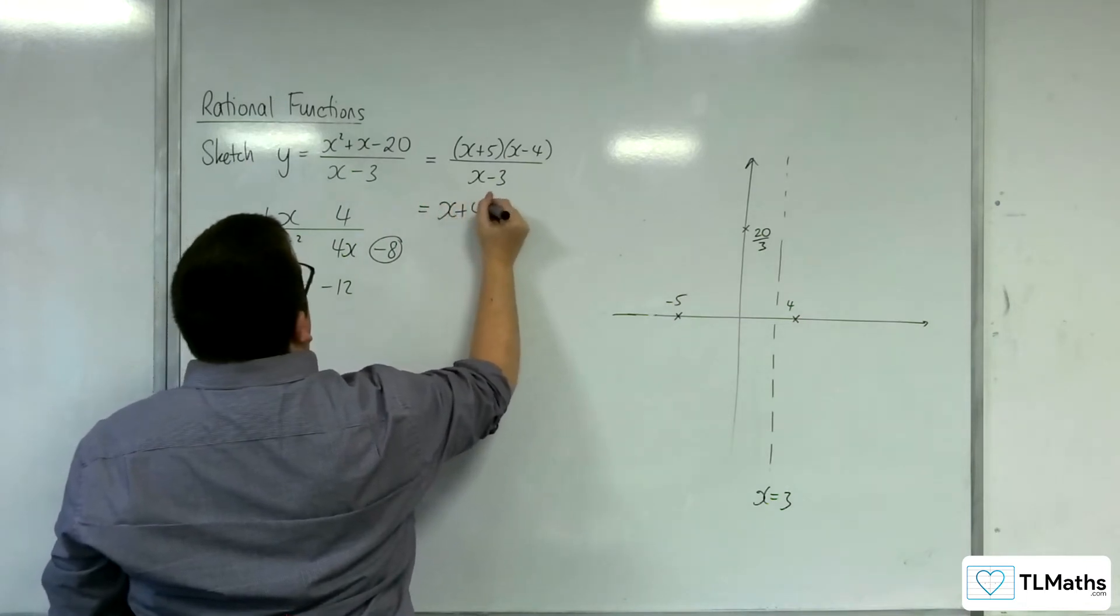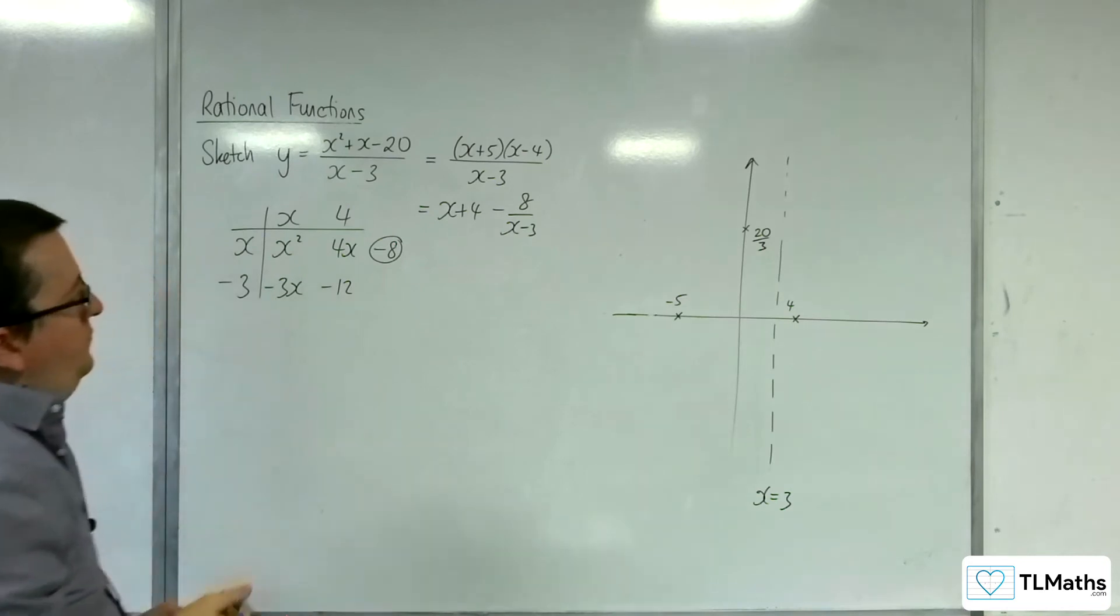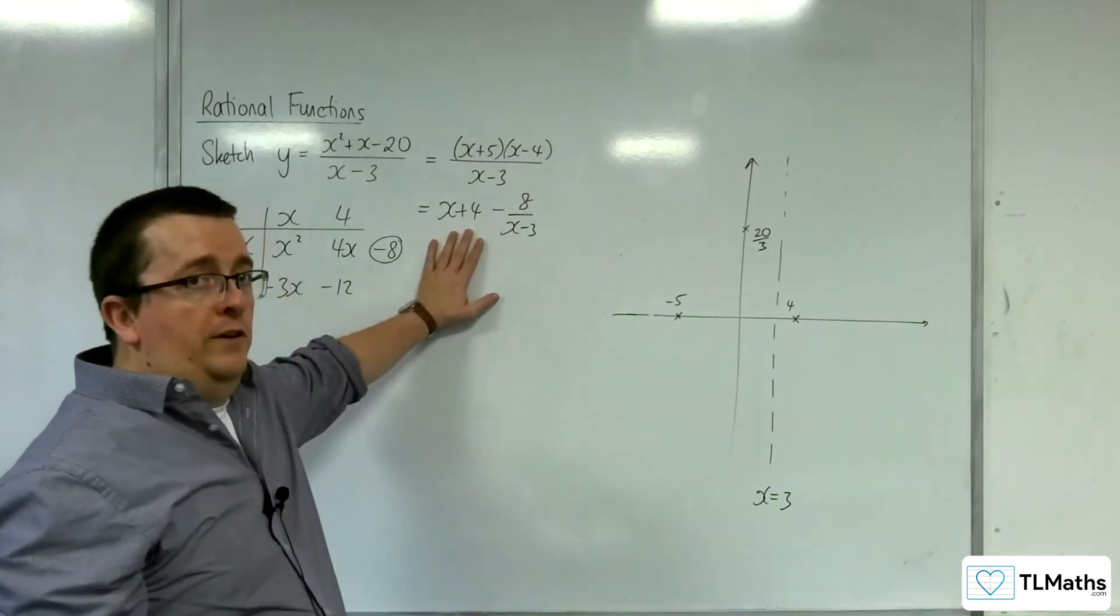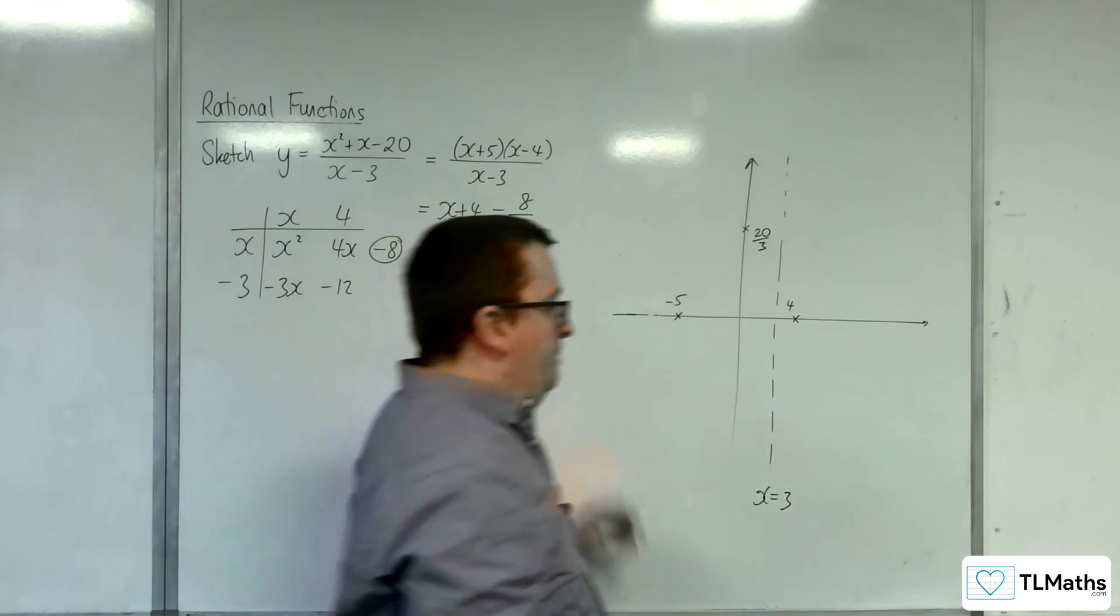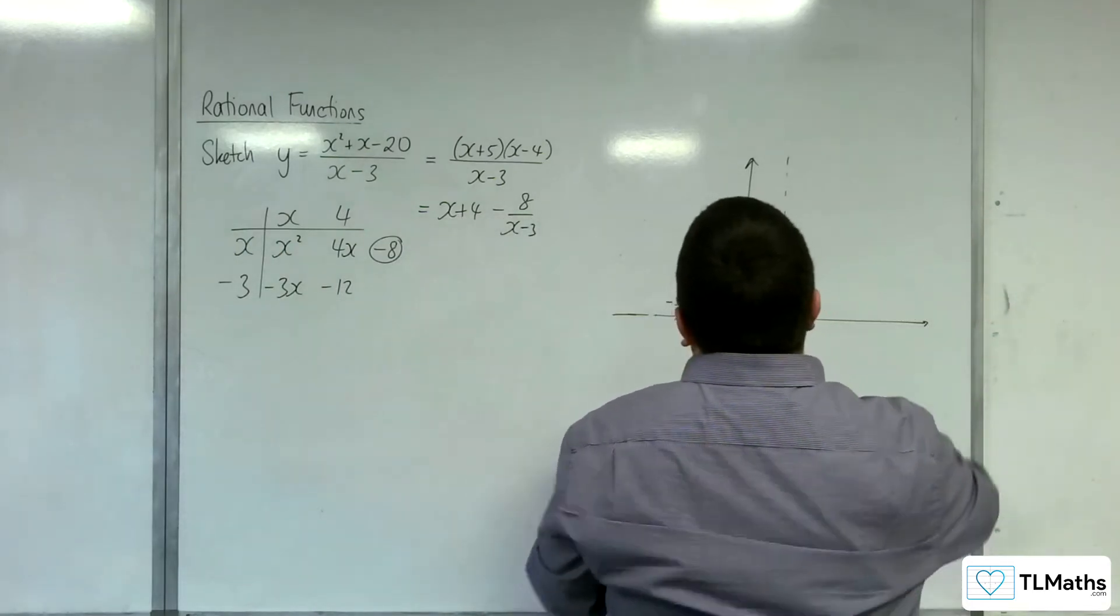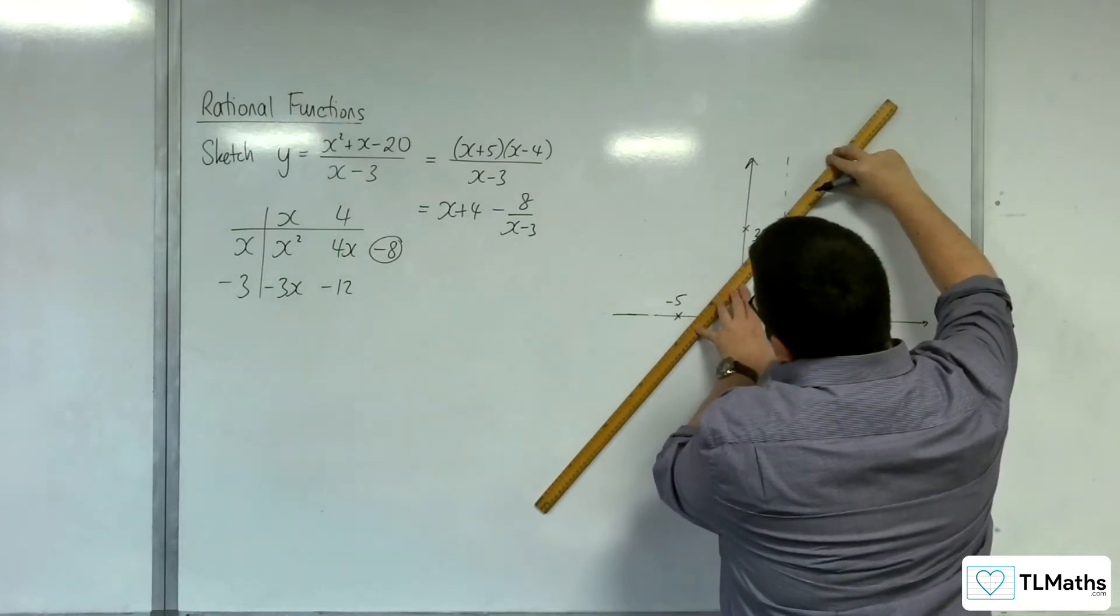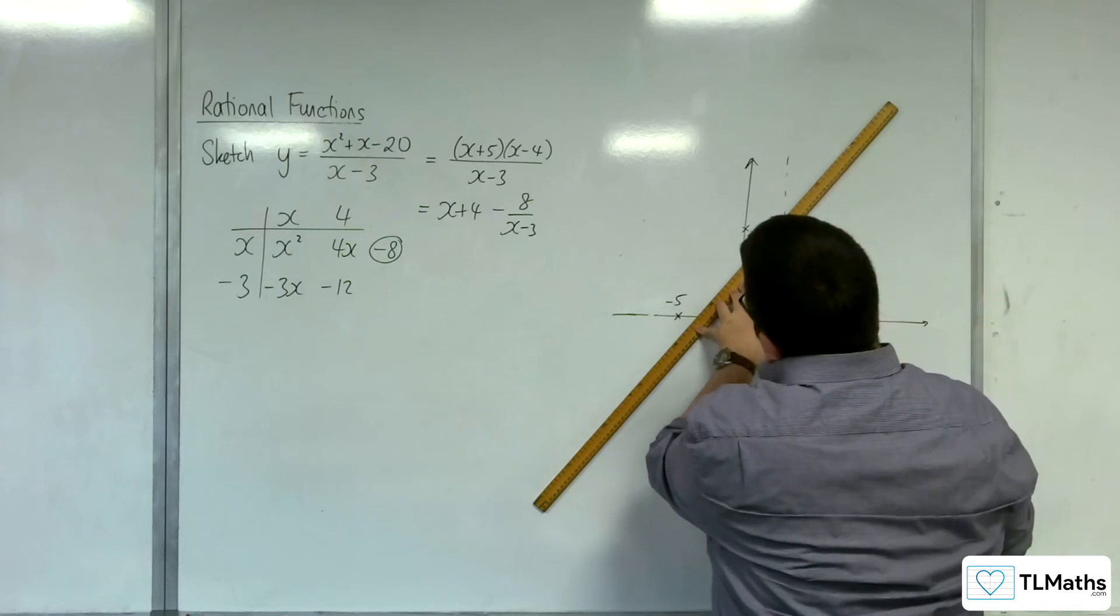That's my remainder. So, this is equal to x plus 4, minus 8 over x minus 3. So, y equals x plus 4 is my oblique asymptote. Something like this.